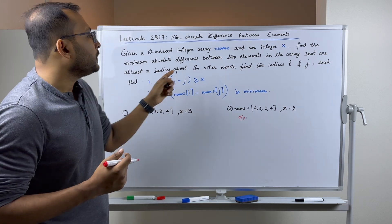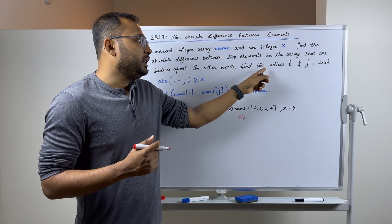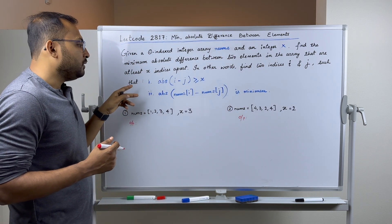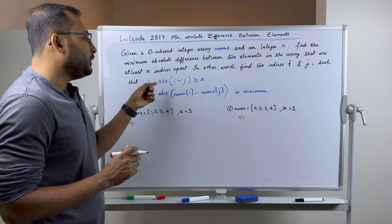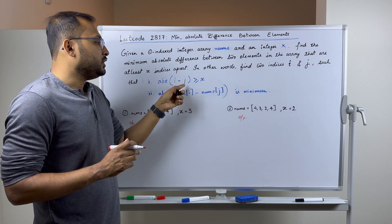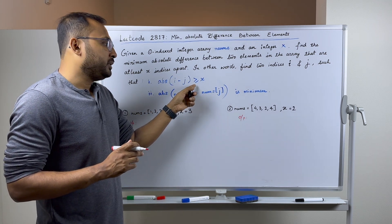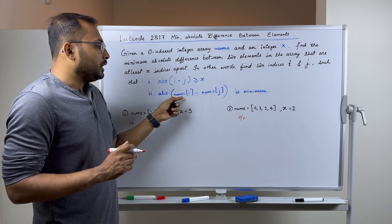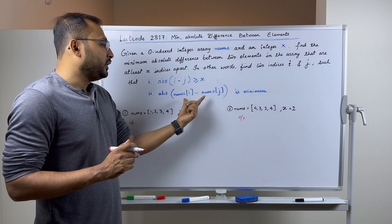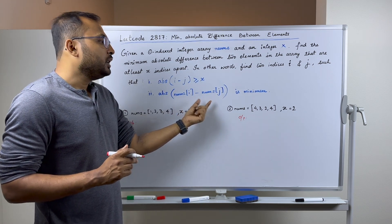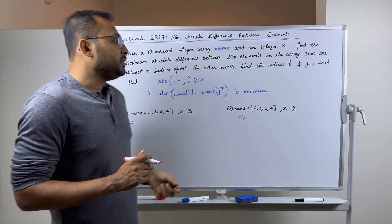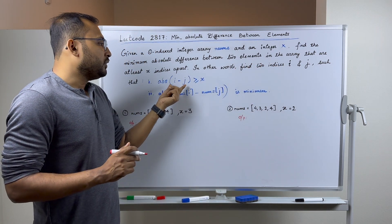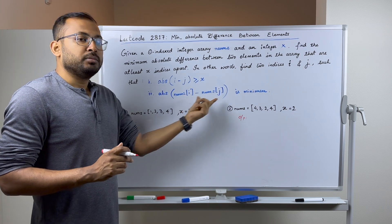So what does that mean? We need to find two indices i and j in the array nums such that two conditions are satisfied. The absolute value of the difference of indexes i and j is at least x, greater than or equal to x, and the absolute value of the difference of nums[i] and nums[j] is minimum. So you have to find a pair where the index difference is at least x and the value difference is minimum.